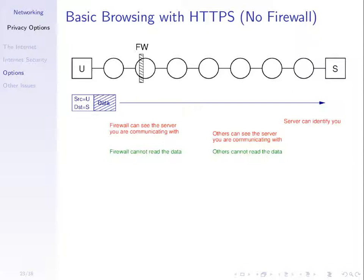But they can monitor who you're communicating with. By looking at the addresses inside those packets, the source IP address and the destination IP address must be sent unencrypted so that the nodes know where to send it. So anyone, including the firewall, your local ISP or any other ISPs, can see that it is you communicating with the server. HTTPS provides confidentiality of data, but does not provide privacy of who's communicating.